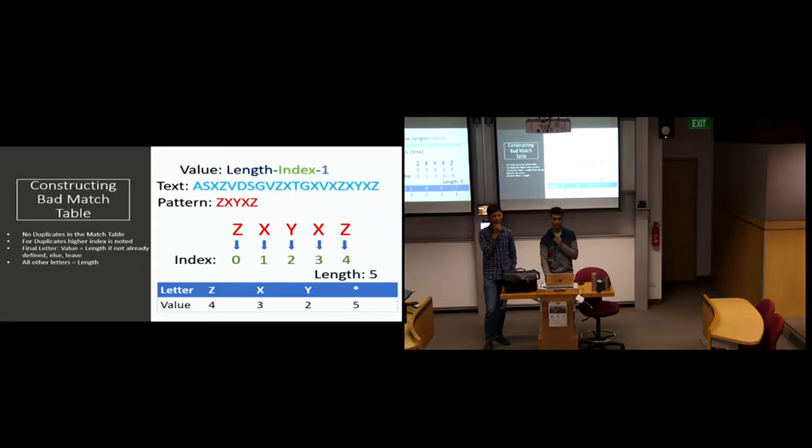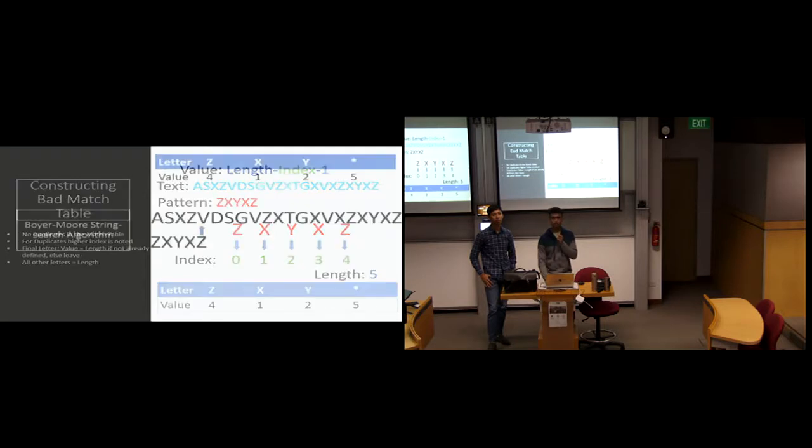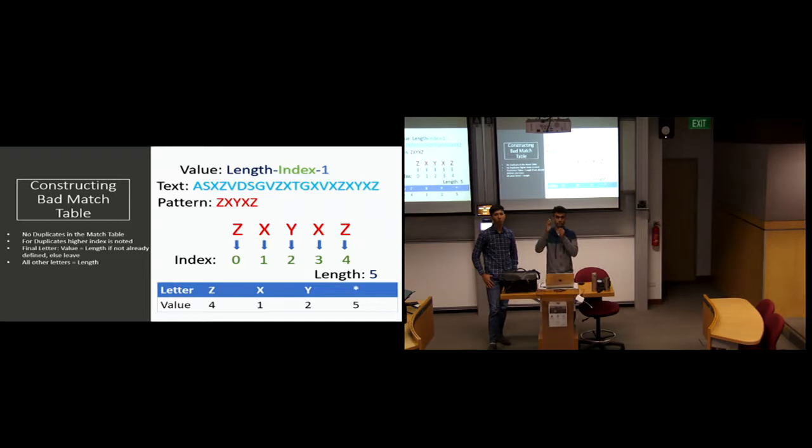There are certain rules which you need to apply for the bad match table. There are no duplicates in the match table. There are two z's, so you don't have a duplicate. You just take one. There are two x's. Again, you don't use a duplicate. For the higher index, the latter one is noted. You can see there are two x's. The value changes to the rightmost x. That's 5 minus 3 minus 1, which is 1. There's another rule. For all the other characters, you take the value as 5. If your character, there are two z's, right? The last z, if there is an earlier representation of that character, you take the value of that. But if that z was a new character, like an a, you don't take the value from the formula. You take that value as 5, which is the length.